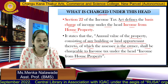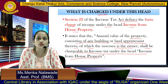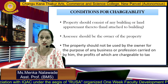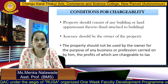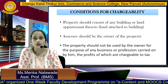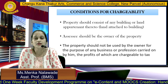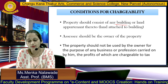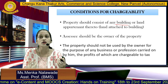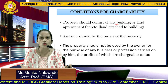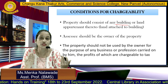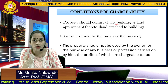This means that there are certain conditions based on which we have to charge income on house property. The first condition is that the property should consist of any building or land appurtenant thereto. When we talk about a building here, we are talking about a residential property with a proper permanent structure — a floor, walls, and a roof. Those buildings which are residential are covered under this word 'building.'